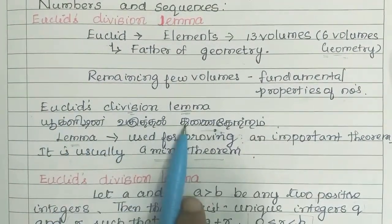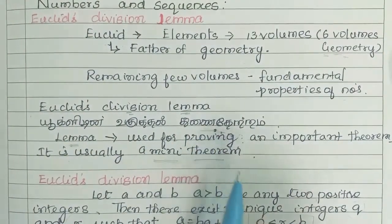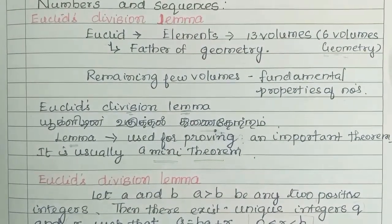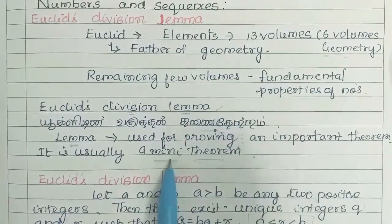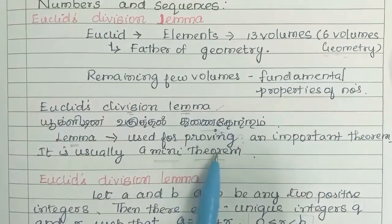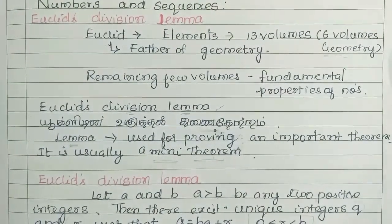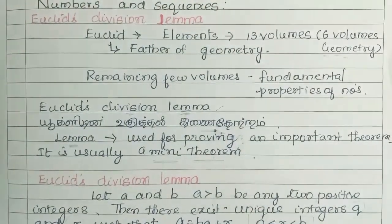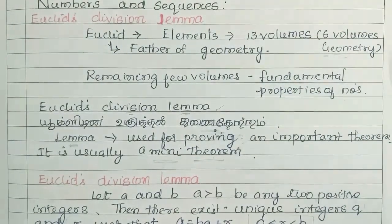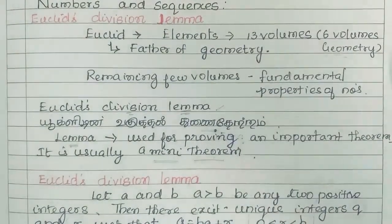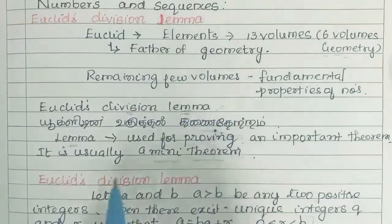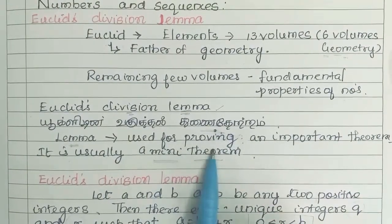Now let's discuss Euclid's Division Lemma. In Tamil it is called Euclid's Vagutthal Thunai Thetram. You may have studied theorems last year in 9th grade. When you explain a theorem, you can add small supporting results in the middle — that small result is called a Lemma. A Lemma is like a mini-theorem. It contains just 2 or 3 lines of information and is used for proving an important theorem.